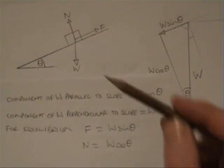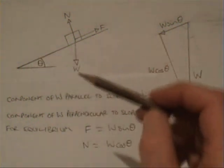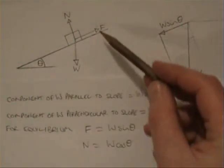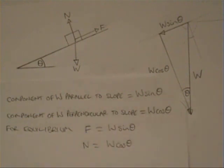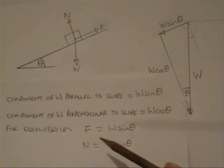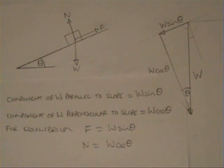For equilibrium, the component of W acting down the slope must equal F, and the component of W at right angles to the slope must equal N. So we have the equations F equals W sin theta, and N equals W cos theta.